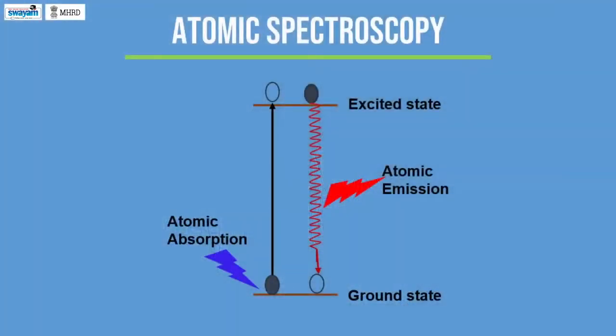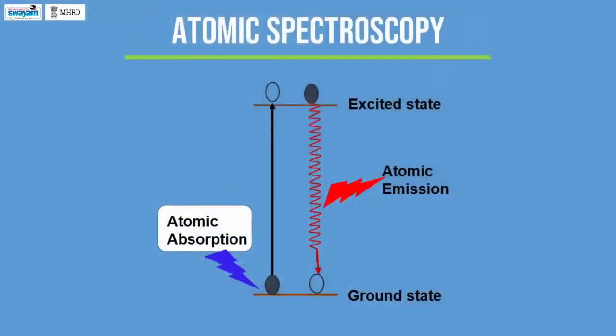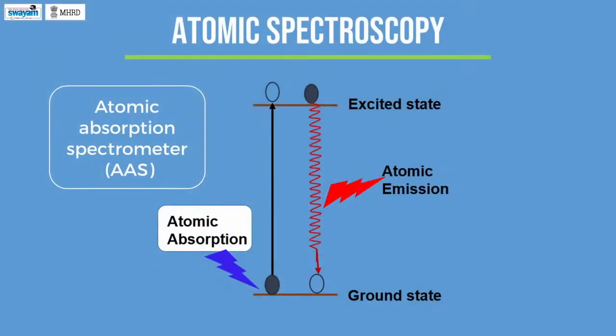This diagram explains the atomic absorption and emission processes. Atomic energy levels arise because of the presence of electrons in different atomic orbitals. Atomic absorption takes place if an electron sitting in the ground state is supplied with energy in terms of light. Atomic absorption can be measured by an atomic absorption spectrometer, or AAS in short form.